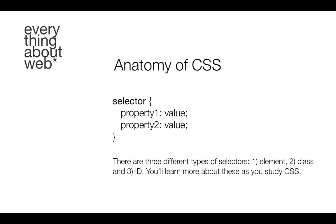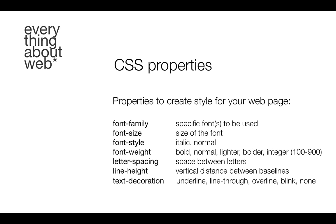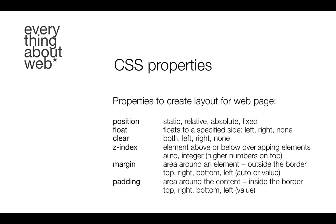There are three different types of selectors: element, class, and ID. You'll learn more about these as you study CSS. Now let's take a look at some of the CSS properties. Some of the properties you'll use most frequently for style include: font-family, font-size, font-style, font-weight, letter-spacing, line-height, and text-decoration. And properties to create layout for your web page include: position, float, clear, z-index, margin, and padding. These are some of the properties that will affect the style and the layout of your pages.